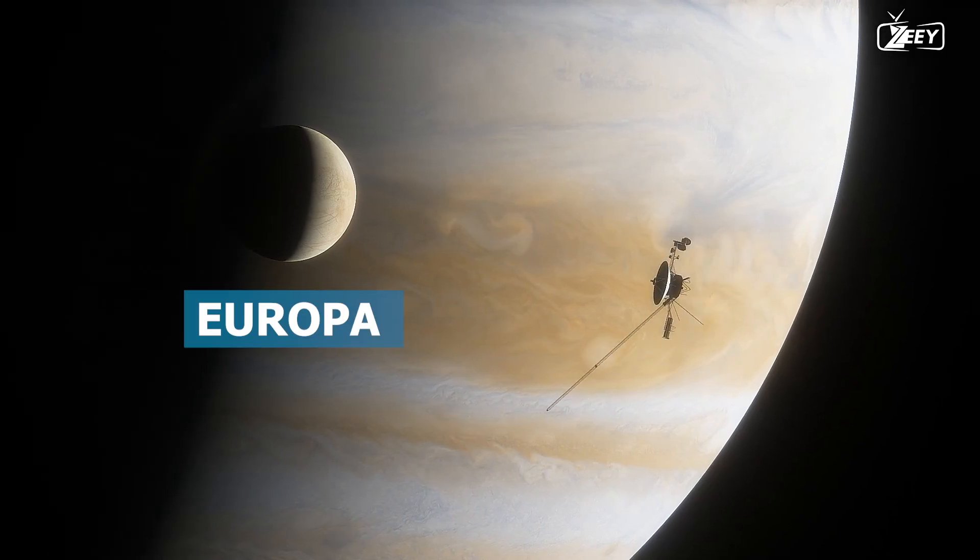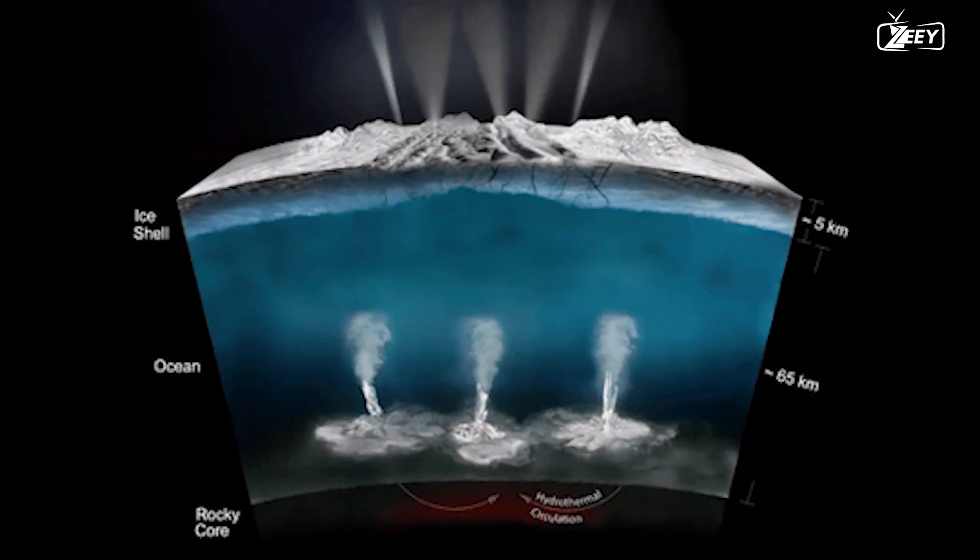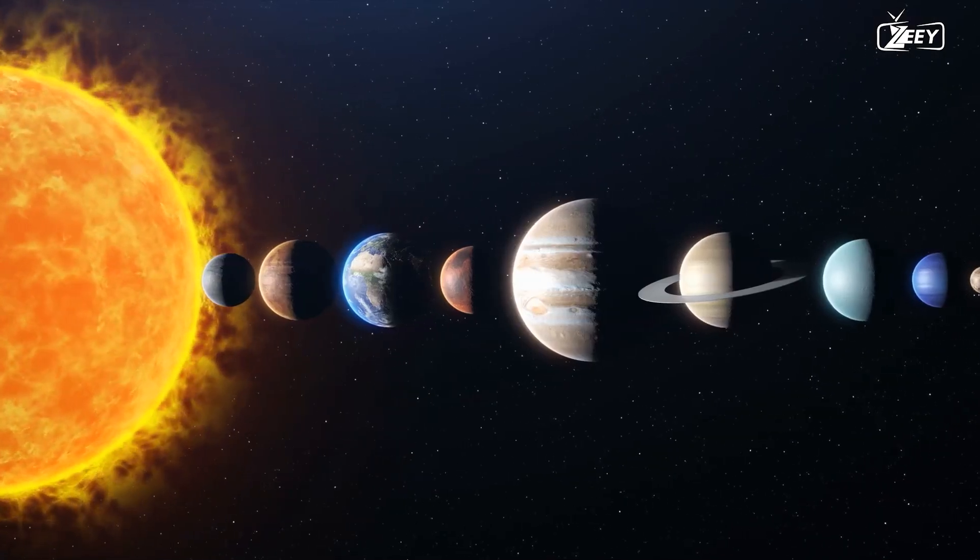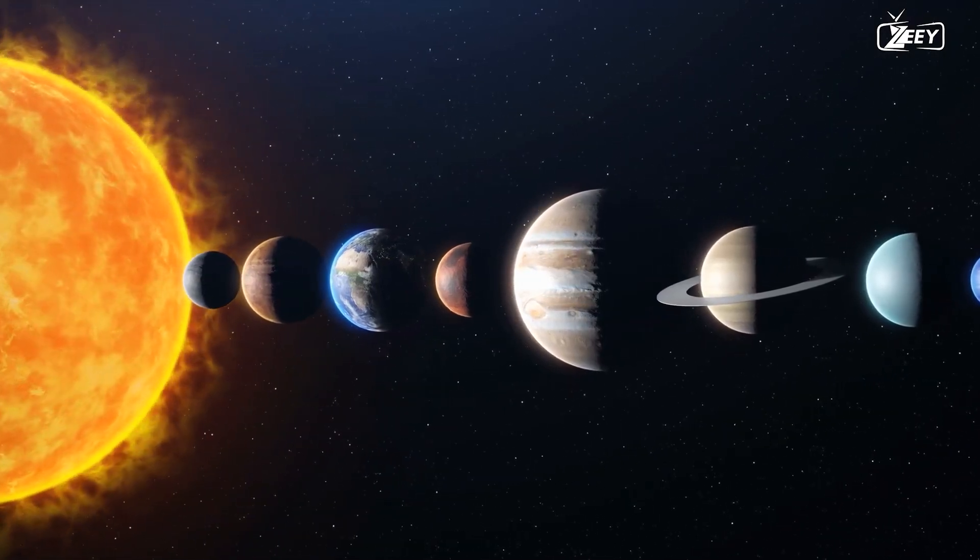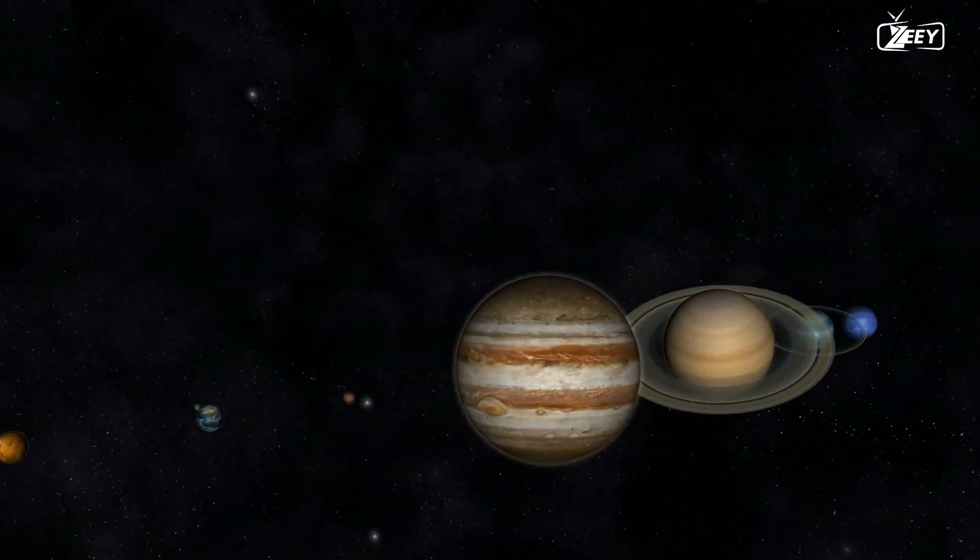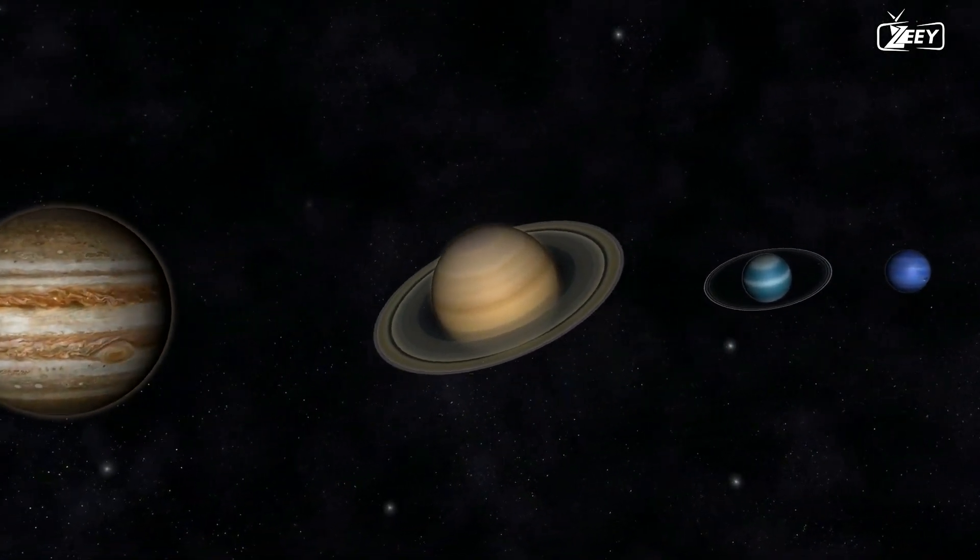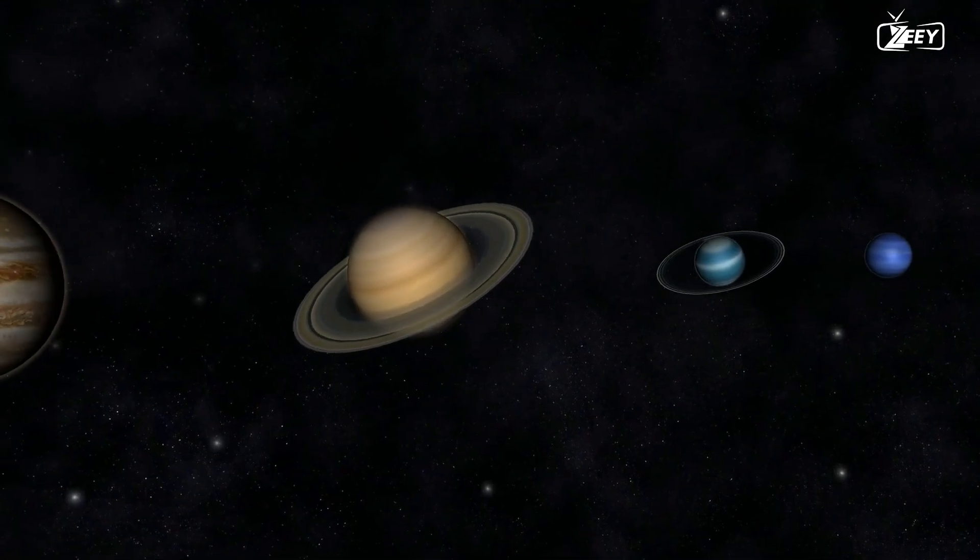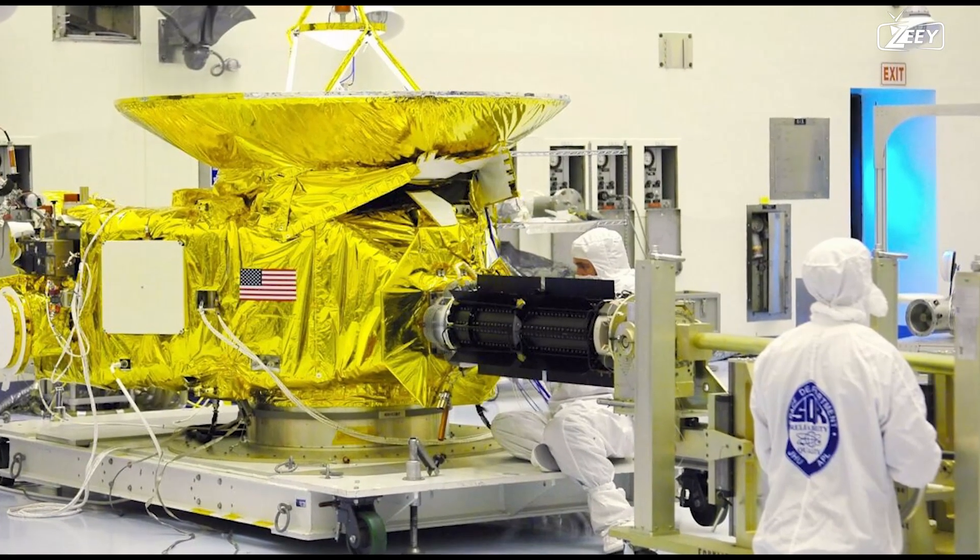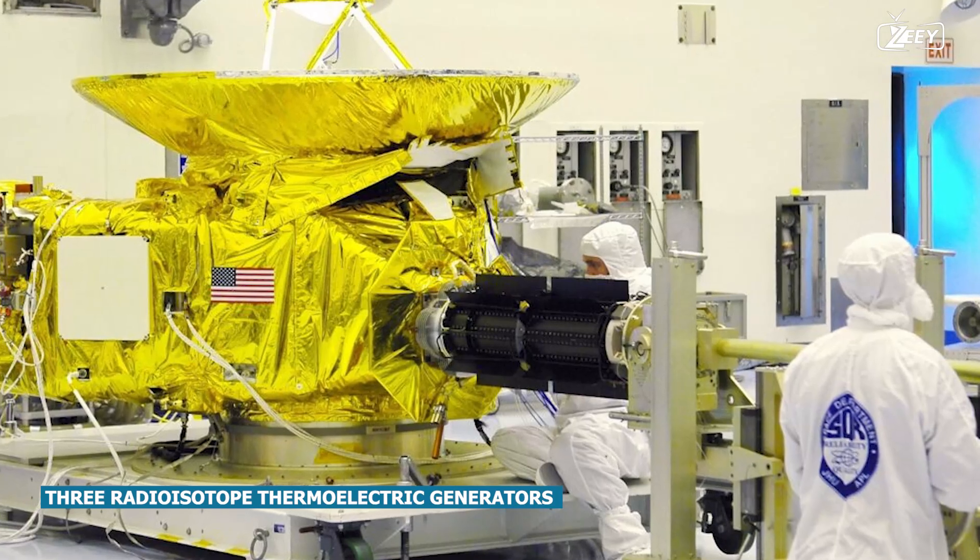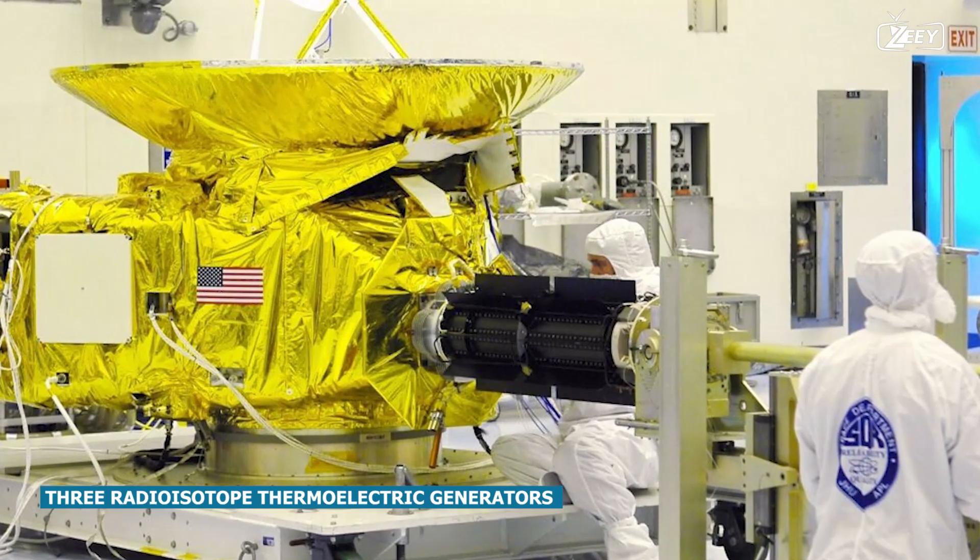Moons such as Europa are believed to contain subsurface oceans of water. This incredible voyage was made possible by a fortunate alignment of the outer planets that occurs only once every 176 years.